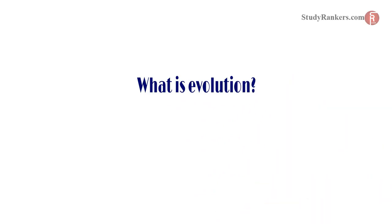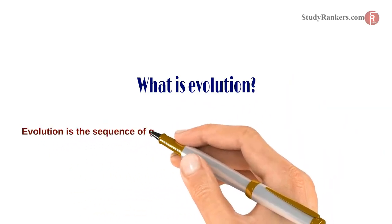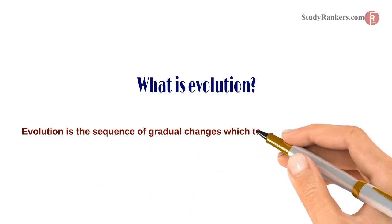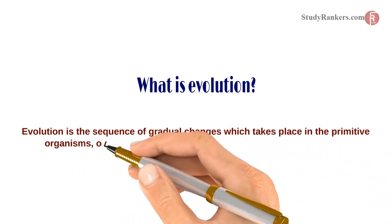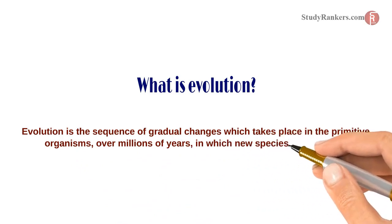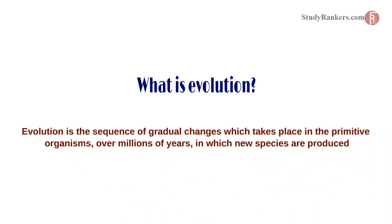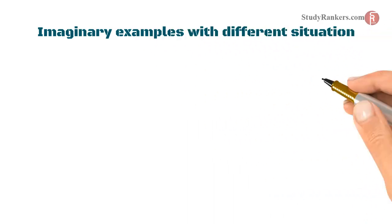What is evolution? Evolution is the sequence of gradual changes which take place in the primitive organisms over millions of years, in which new species are produced. To understand how evolution takes place, let us consider some imaginary examples with different situations.